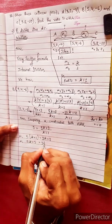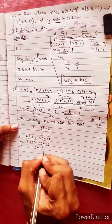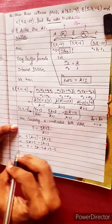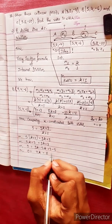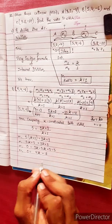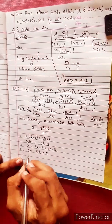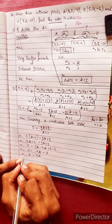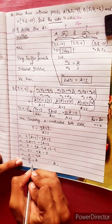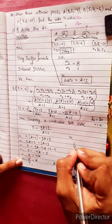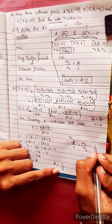Comparing x-coordinates: 5 equals (9k + 3) divided by (k + 1). So 5(k + 1) equals 9k + 3, giving 5k + 5 equals 9k + 3, so 9k minus 5k equals 5 minus 3, meaning 4k equals 2, therefore k equals 1/2.